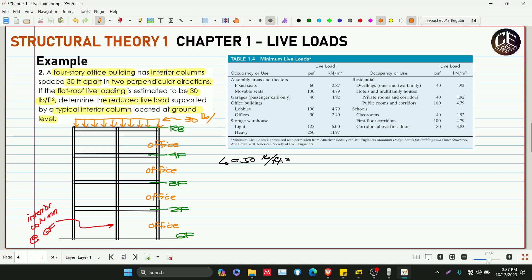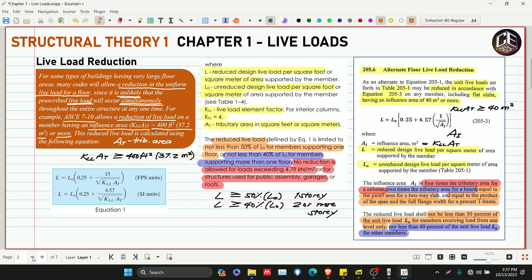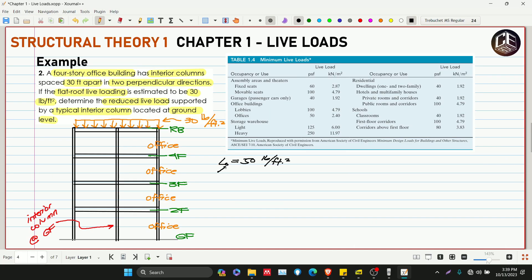The loadings here—30 pounds per square foot—we need to reduce the 50 pounds per square foot. Let's check according to our code: when the influence area is greater than 400 square feet, we reduce the live load. Also, no reduction is allowed for loads exceeding 4.79 kN per square meter.